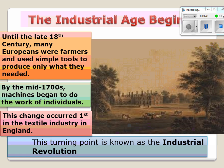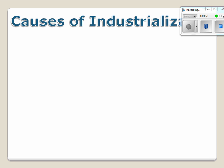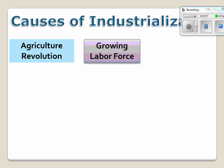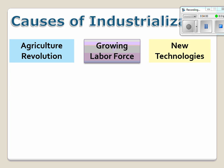Now we're going to move on to the causes of industrialization. There are three main causes of industrialization: one is the agricultural revolution, one is the growing labor force, and the third is the development of new technologies.